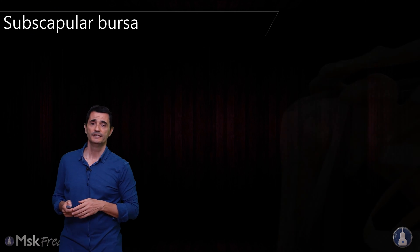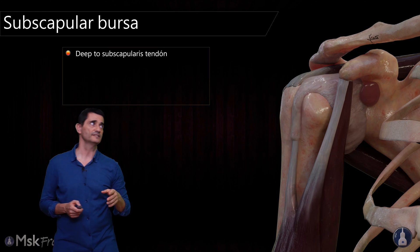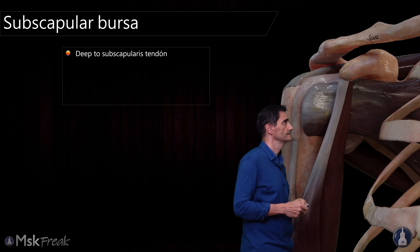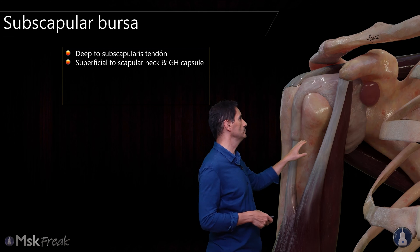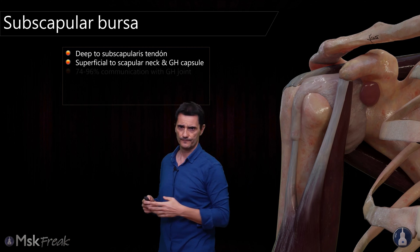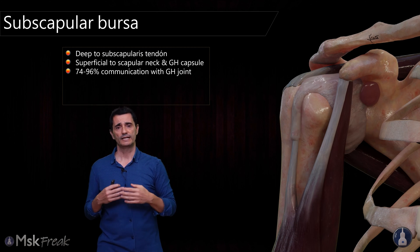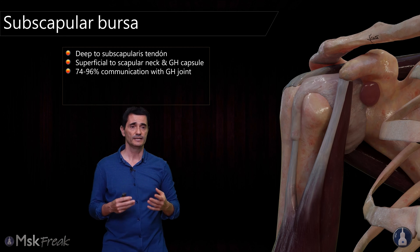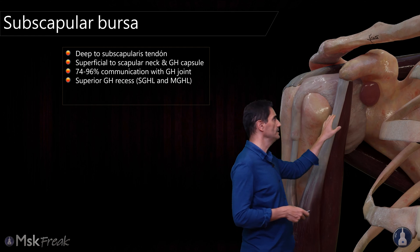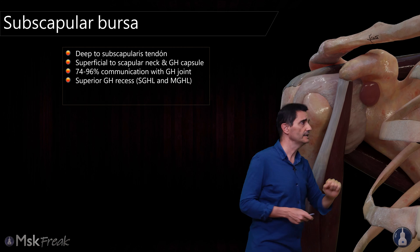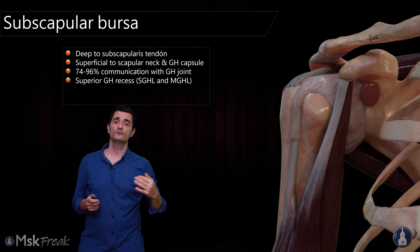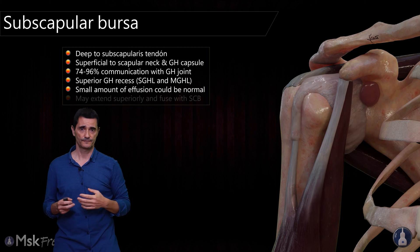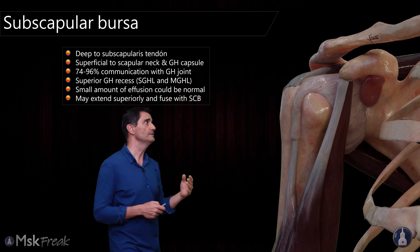And finally the subscapular bursa. The subscapular bursa is deep to the subscapularis tendon and superficial to the scapular neck and the glenohumeral capsule. In 74 to 96% of cases there will be a communication between the glenohumeral joint and this bursa — that's why some people say that this is a recess, specifically a recess between the middle glenohumeral ligament and the superior glenohumeral ligament, and many people think about this bursa as an anterior recess. There is usually a small amount of effusion that could be normal, so maybe not pathologic. It may extend superiorly and fuse with the subcoracoid bursa.